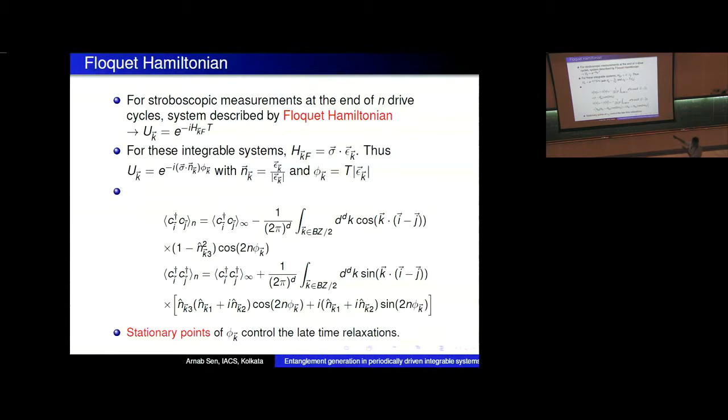Because of the integrable two-by-two structure here in terms of the Jordan-Wigner fermions, one can show that the Floquet Hamiltonian can again be written simply in k space in the following manner: sigma dot epsilon_k. At each k again it's like a magnetic field. This sigma is just the three Pauli matrices and this epsilon_k is like the magnitude of that magnetic field at some k.